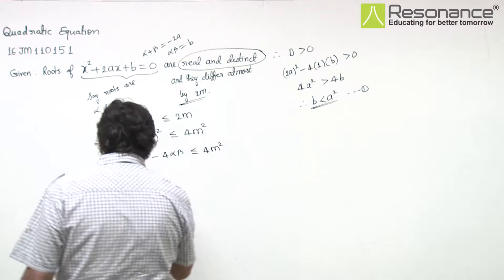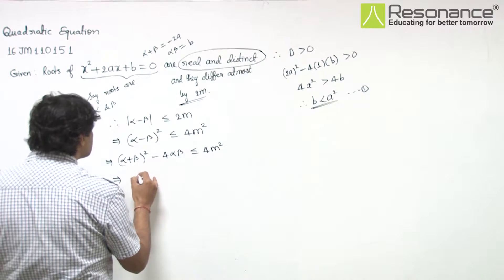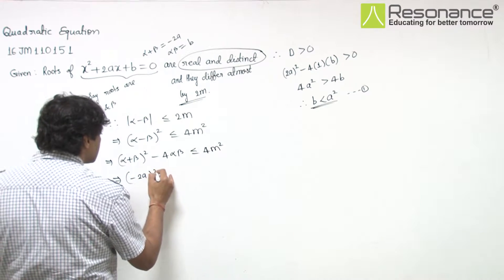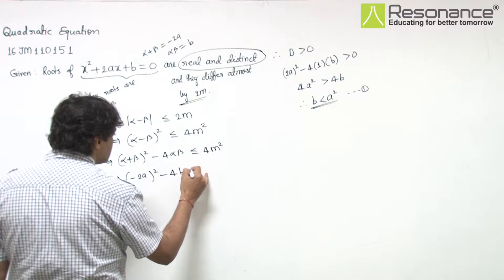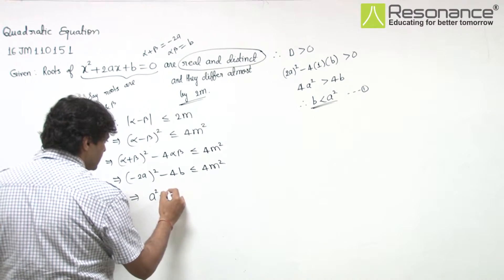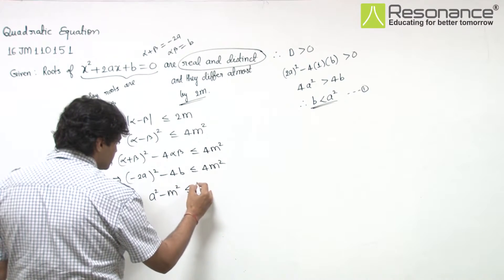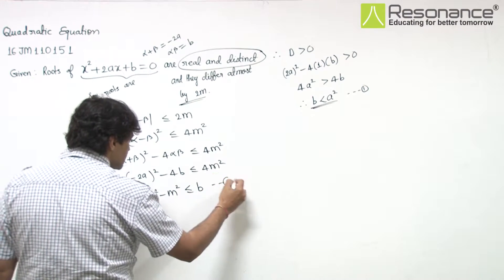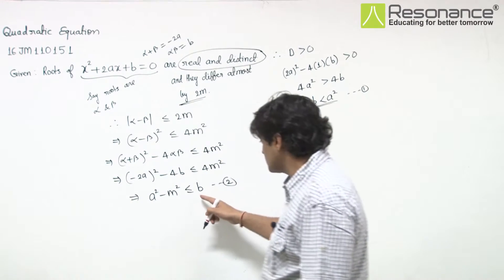Substituting, this becomes (-2a)² - 4b ≤ 4m². So 4a² - 4b ≤ 4m², which gives b ≥ a² - m².